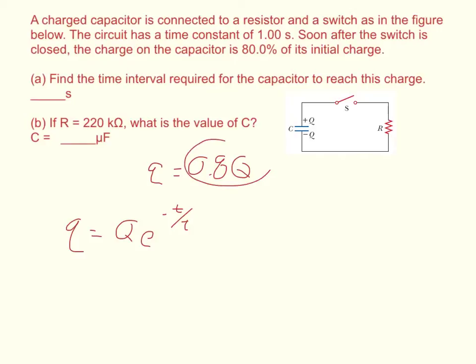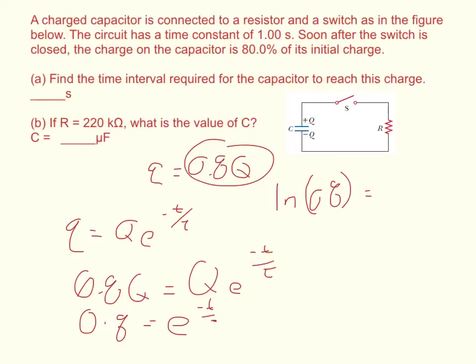If I throw in 0.8 Q naught in for my little Q, I get 0.8 Q naught equals Q naught E to the negative T over tau. My Q naughts when I divide them out cancel, so I get 0.8 equals E to the negative T over tau. Now if I take the natural log of both sides, because E is the base of the natural log, I get that the natural log of 0.8 equals negative T over tau.